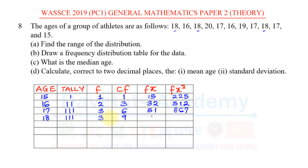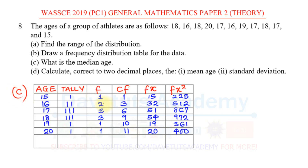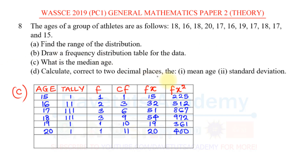Since you now understand how to populate the frequency distribution table, you can complete the remaining rows on your own. To find the median age, we use the frequency distribution table. If we simply listed all entries in ascending order, we would look at the midpoint of the data — but since we already have the frequency distribution table, we use that to obtain the median.